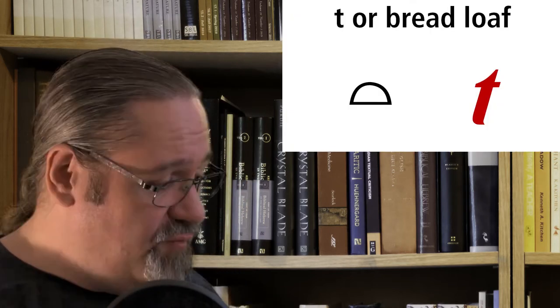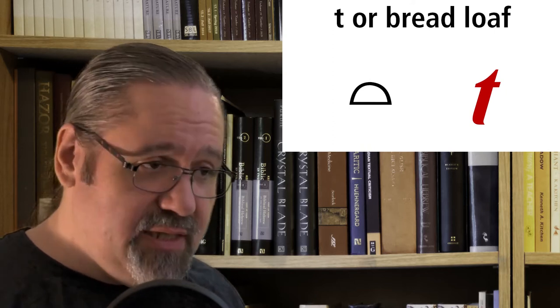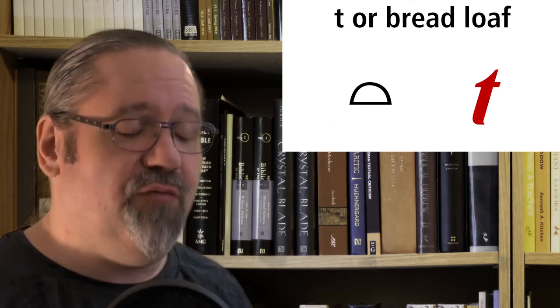So, the first letter we're going to do today is the T, or the loaf of bread. To draw this letter, just draw a semicircle with the flat edge bottom down.